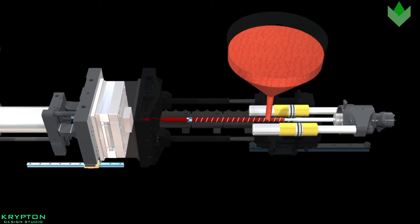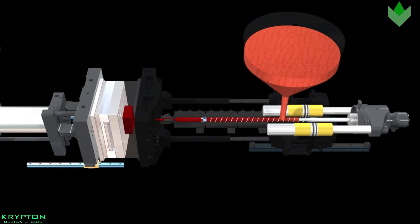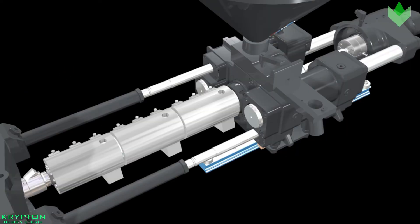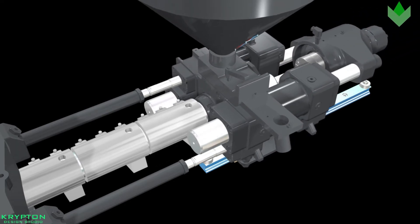As the plunger advances, the melted plastic is forced through a nozzle that sits against the mold sprue bushing, allowing it to enter the mold cavity through a gate and runner system. The mold remains at a set temperature so the plastic can solidify as soon as the mold is filled.